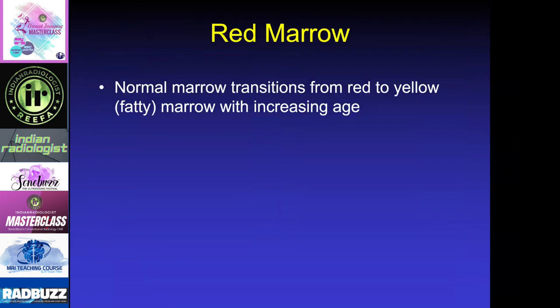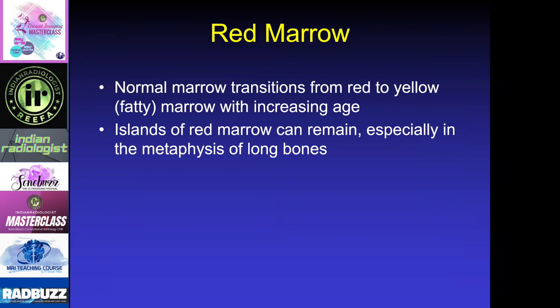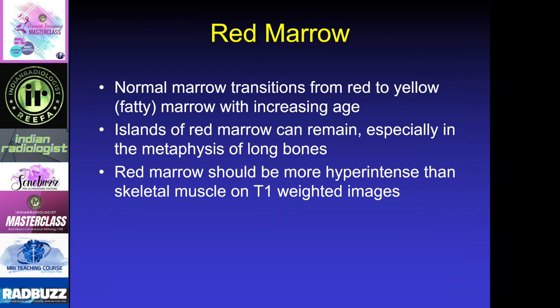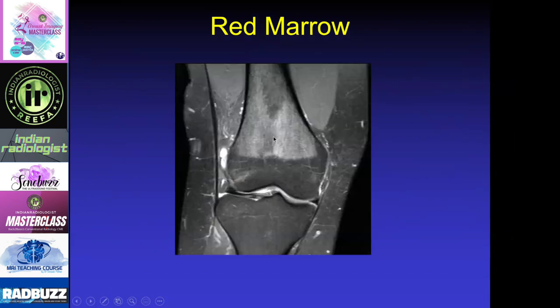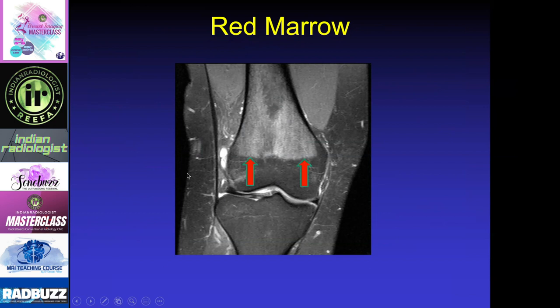Red marrow transitions from red to yellow with increasing age, but you can still have little bits of red marrow that remain in the metaphysis of long bones. The key feature is that red marrow should be hyperintense or brighter than skeletal muscle on T1-weighted images. Another feature is that red marrow should not extend into the epiphysis — it should stop at the physeal scar. Here's an example in the knee where the hypointense signal forms a very sharp line right at the physeal scar.